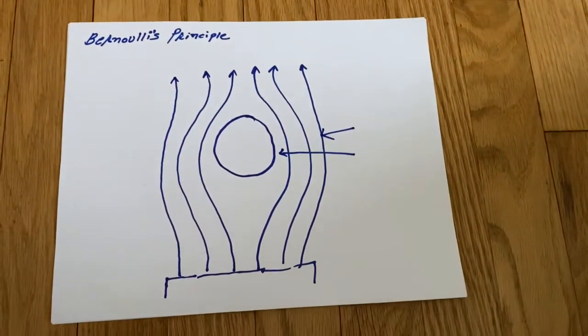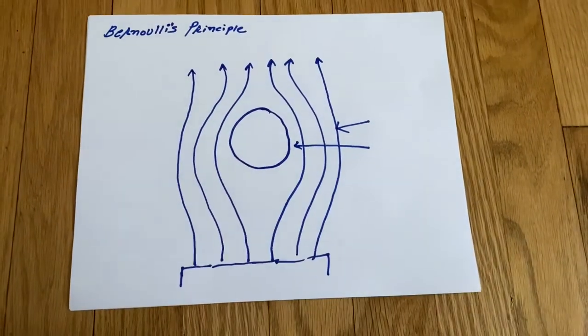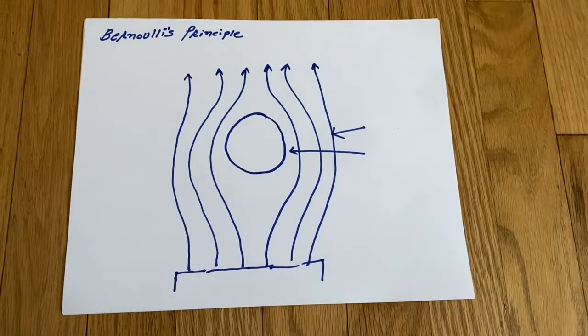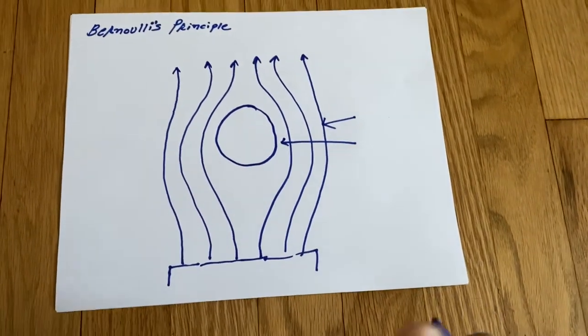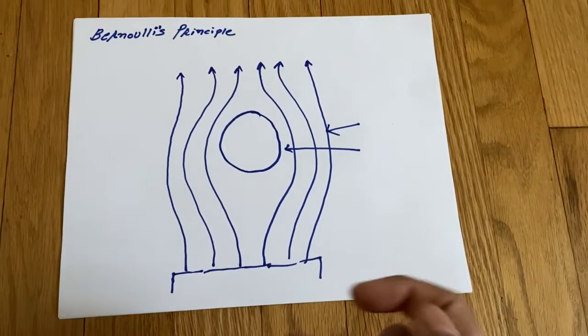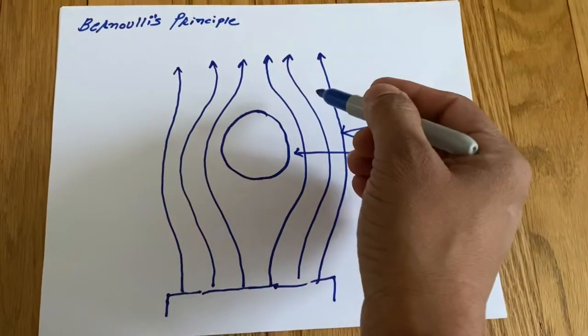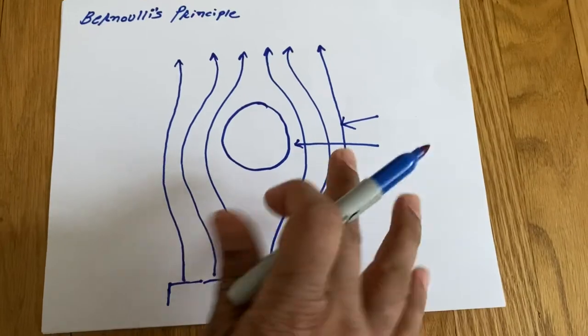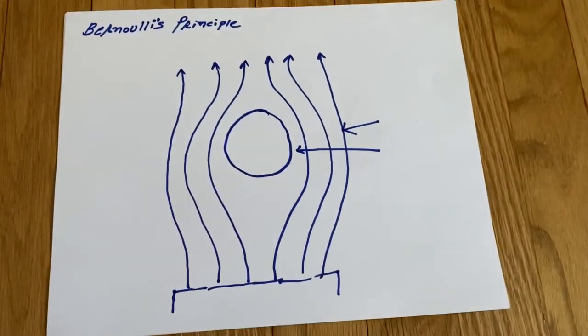But what we could do is we can use smoke to understand the flow even better. So if you have some smoke that you put near a blower, all the smoke is going to come up and you can actually see this in live action. You can't see air unless you put something in it.